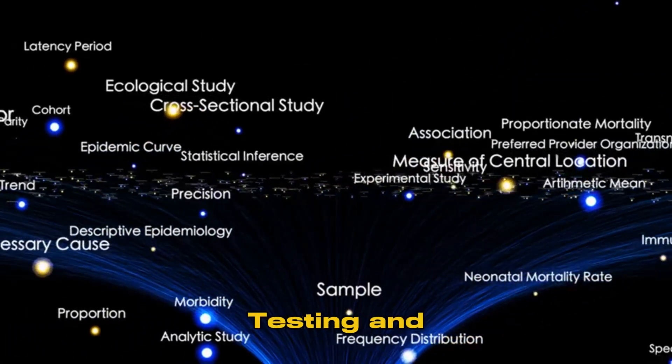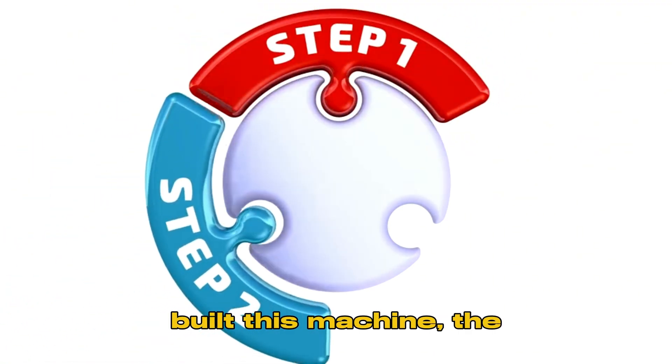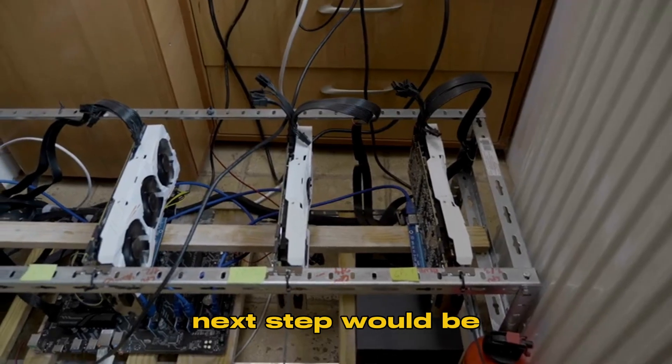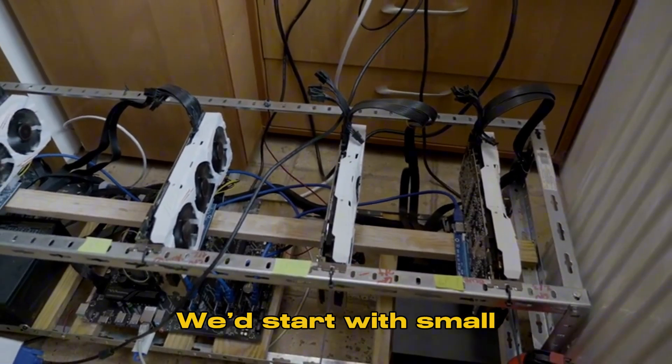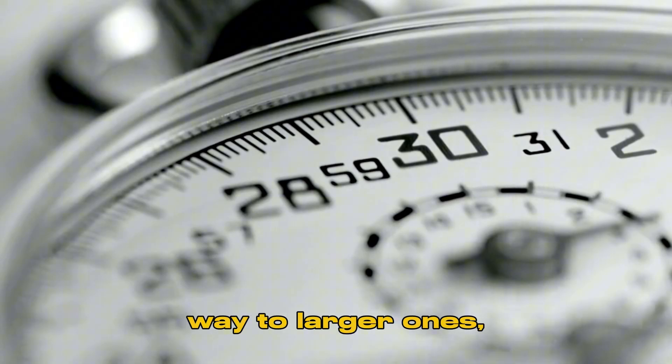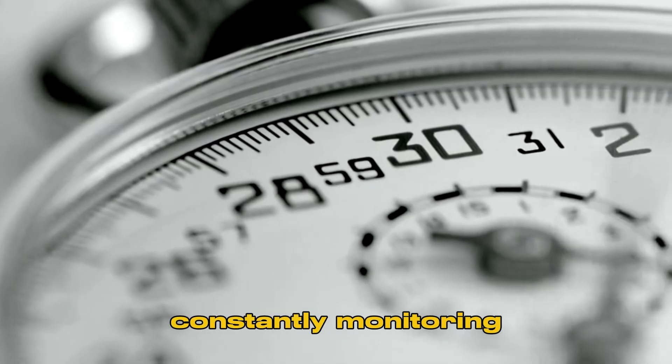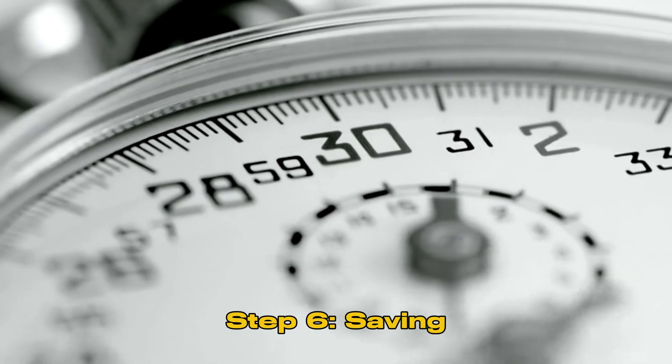Step 5: Testing and adjustments. Assuming we've somehow built this machine, the next step would be cautious testing. We'd start with small time jumps and gradually work our way to larger ones, constantly monitoring for unforeseen consequences.